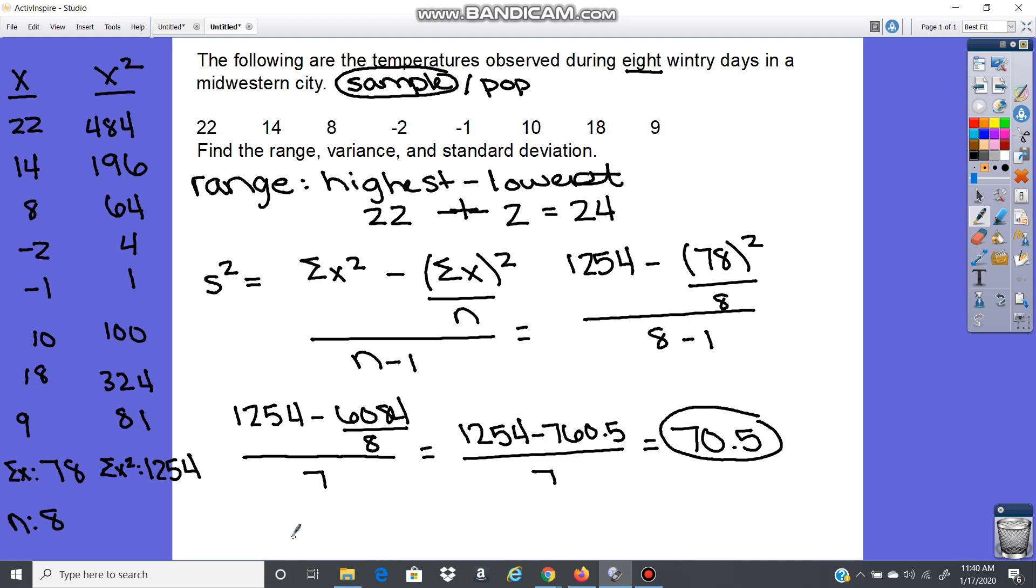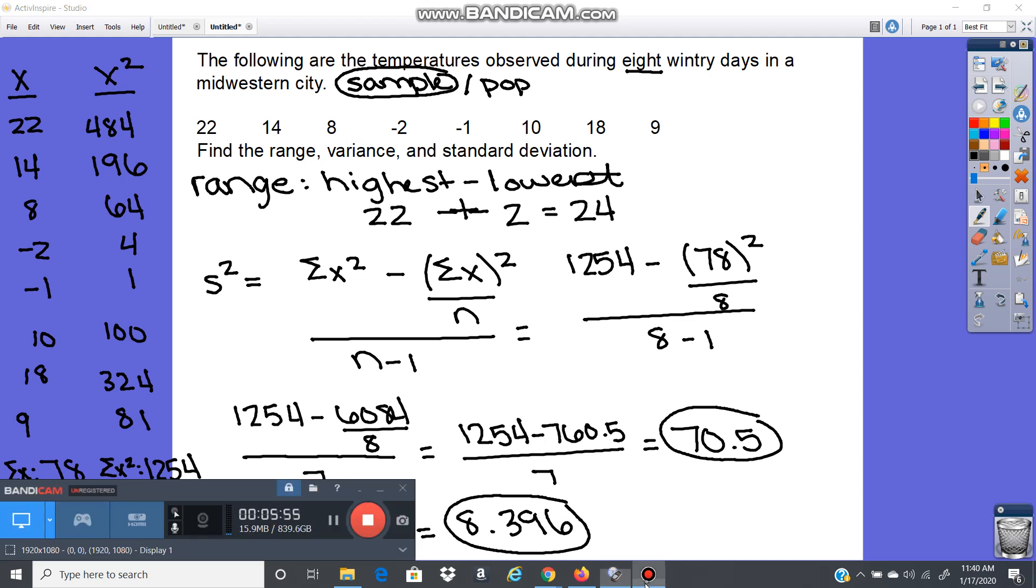To get the standard deviation, I take the square root of the variance. The square root of 70.5 is 8.396 to three decimal places. So our sample variance is 70.5 and sample standard deviation is 8.396. I'm going to do this in the calculator on the next video, so make sure to watch that one as well.